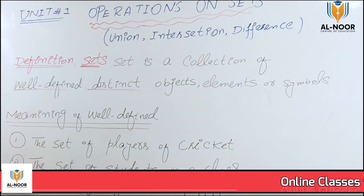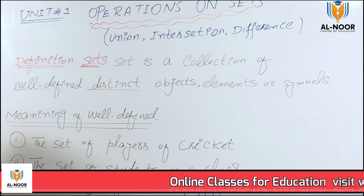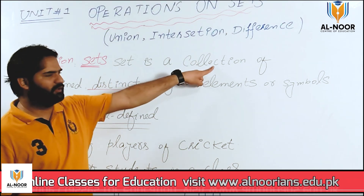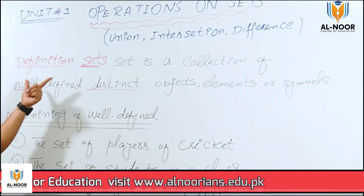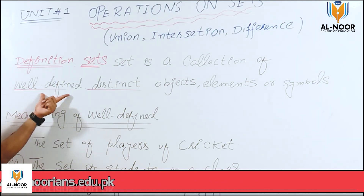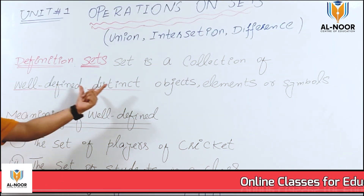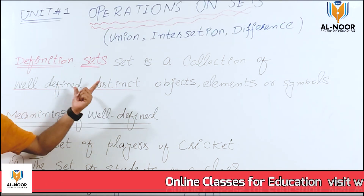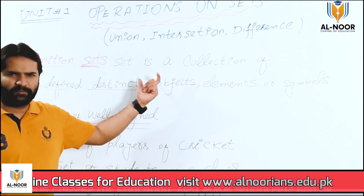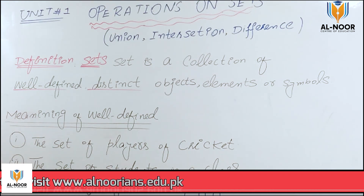Here are three important things about a set: it is a collection, it has elements, and those elements are objects or symbols — such as numbers and alphabets.